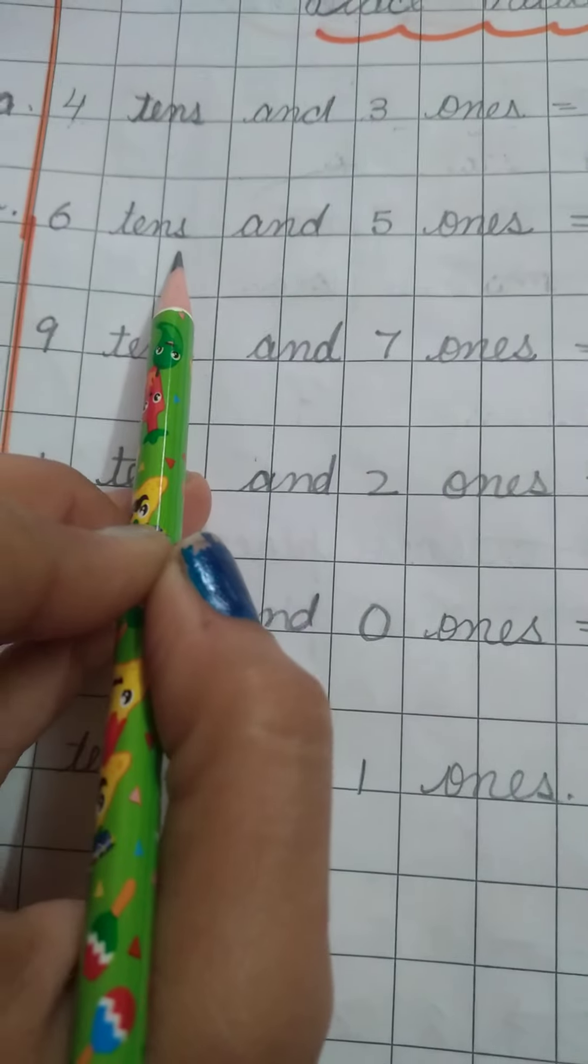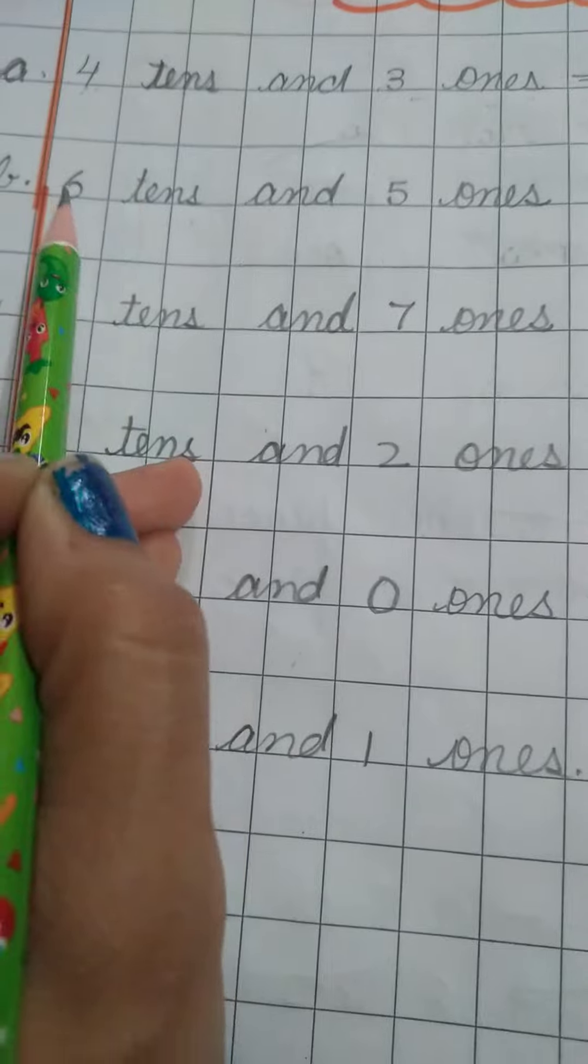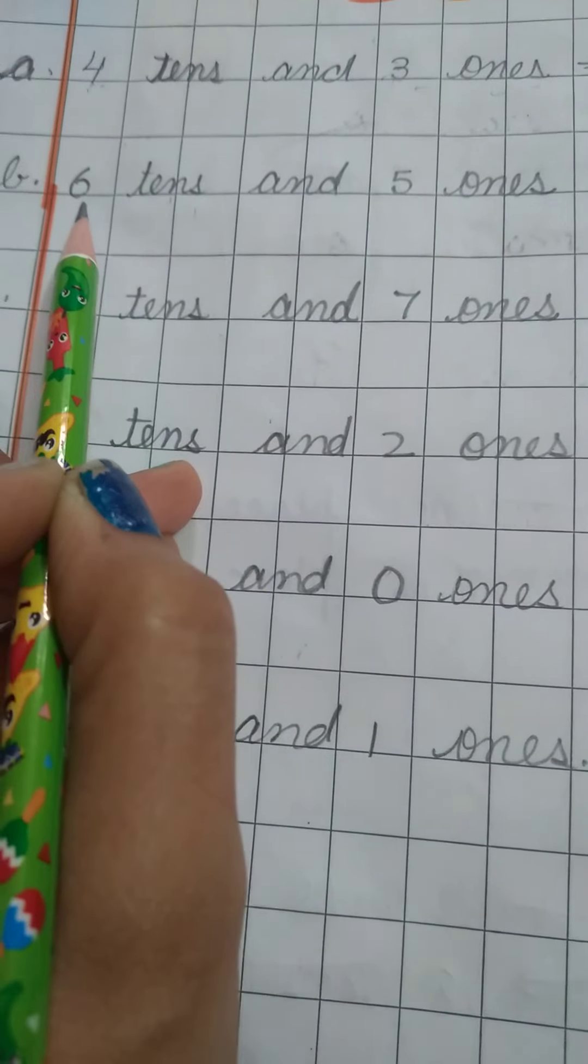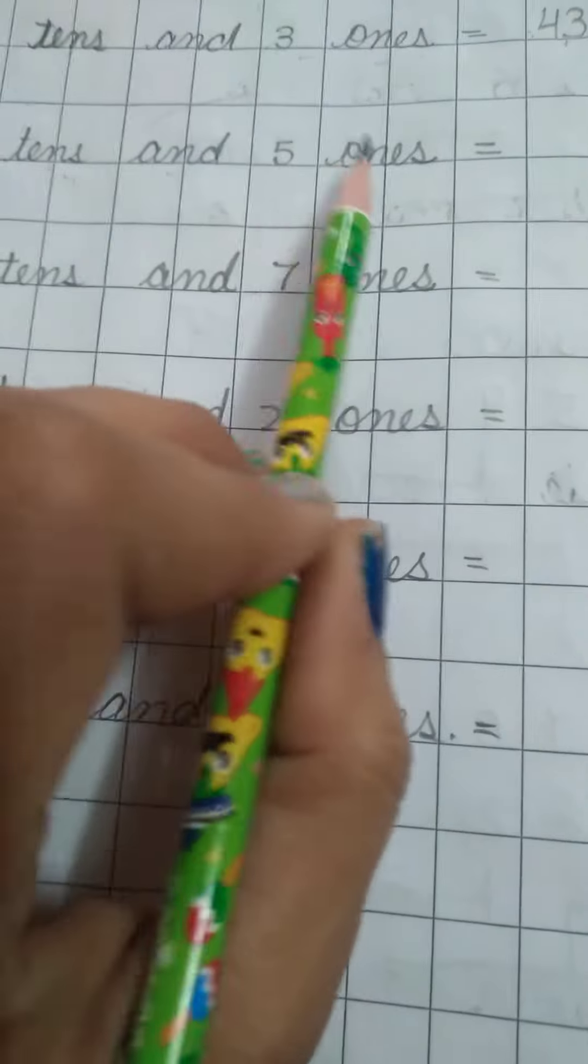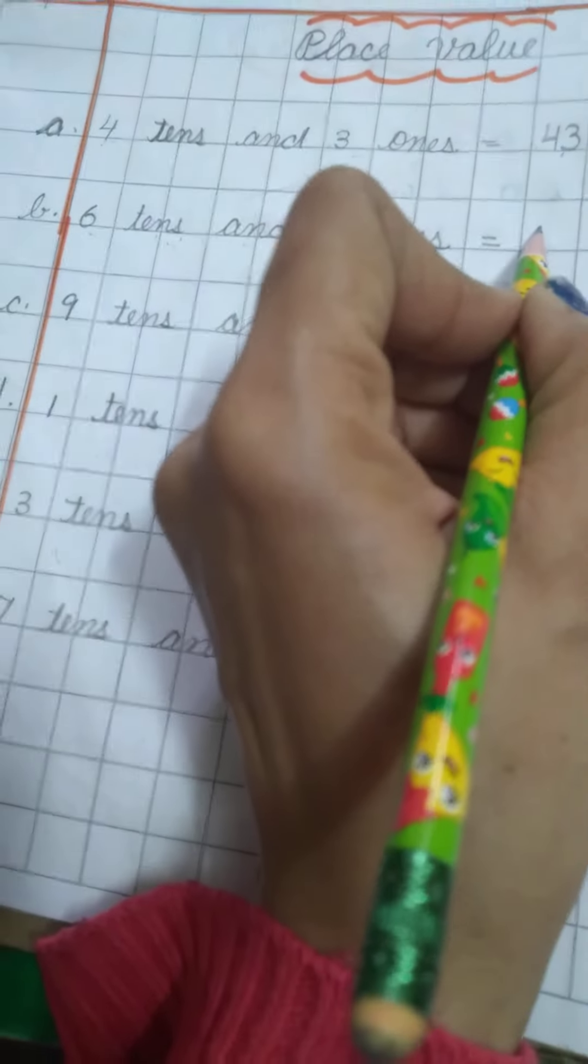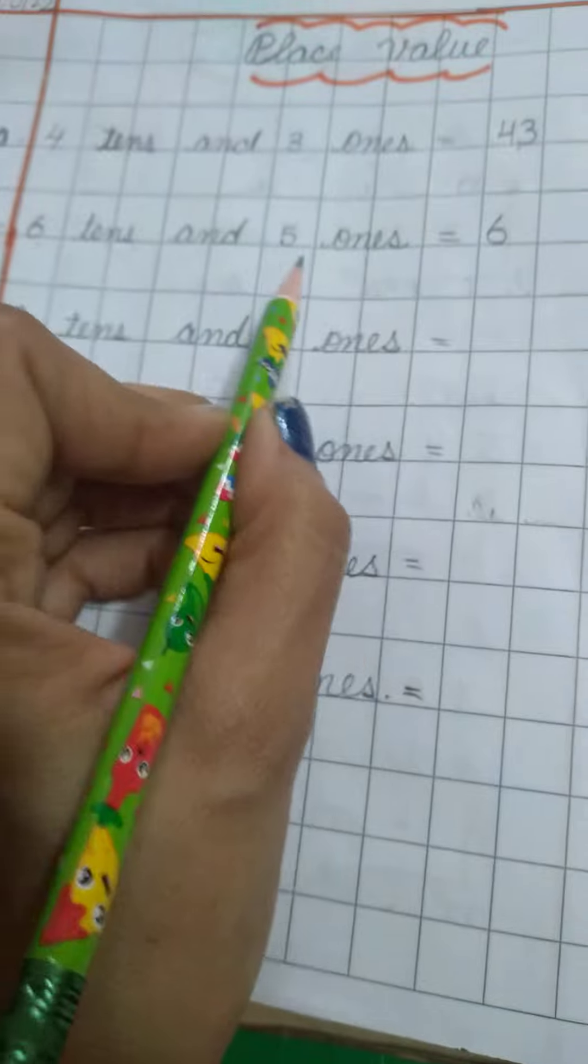6 tens. See, this number is telling us it has a place of tens: 6 tens and 5 ones. What is the place value of 6? Tens.